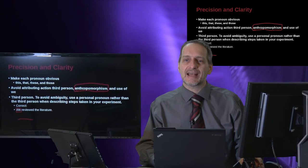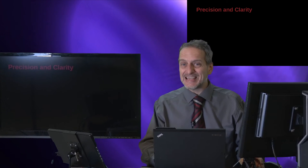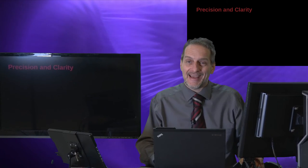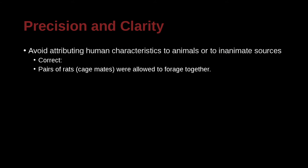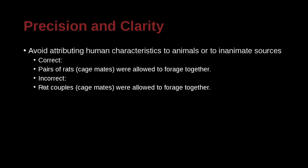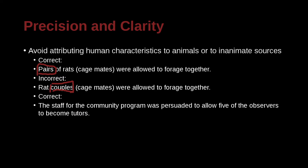What does anthropomorphism mean? It means that you use words that make things sound like they are human. In our research, we want to avoid that very carefully. For example, 'pairs of rats, or cage mates, were allowed to forage together' — that's clear. A bad alternative would be 'rat couples.' Why? Because 'pairs' means two, but 'couples' means two humans — like a married couple or boyfriend and girlfriend. So 'rat couples' makes them sound human, and they are not. They are rats.